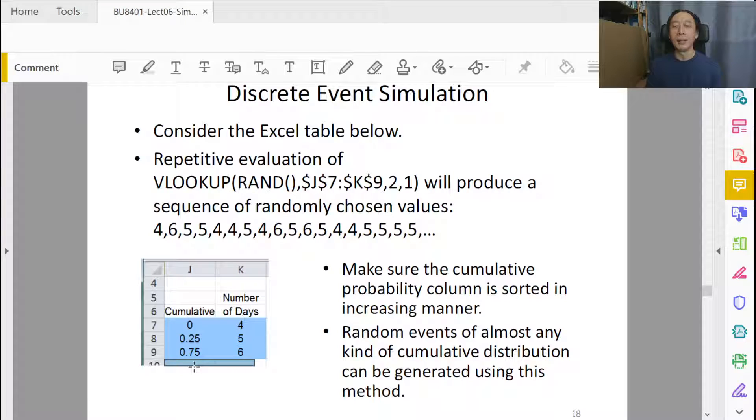Just keep in mind that for VLOOKUP, when you use it for simulation in Excel, always comma two, comma one. The table that we define always starts with zero, and we don't have to have one. When we run this VLOOKUP sequence, we'll be able to get four, six, five, five in some random order, but it's always a bunch of fours, fives, and sixes.